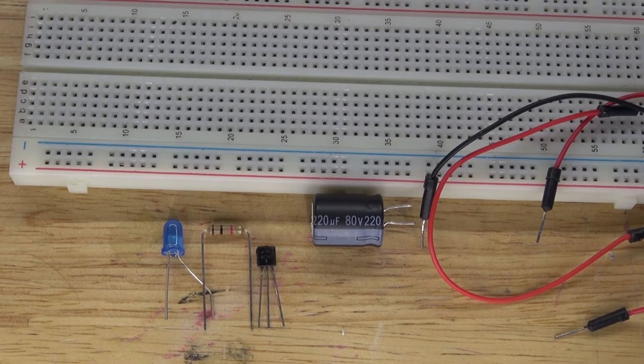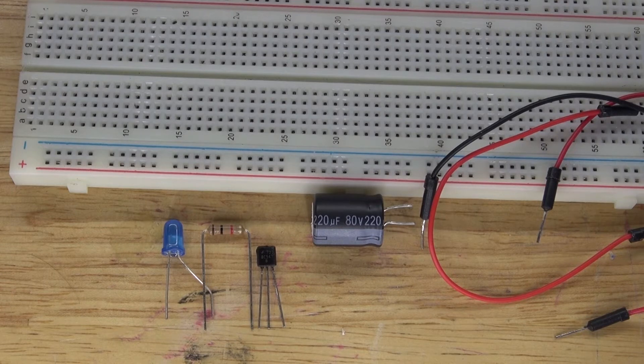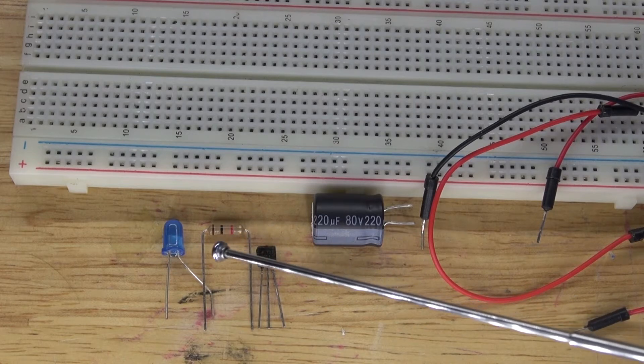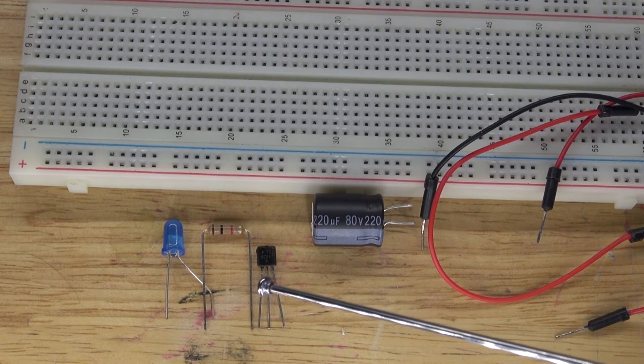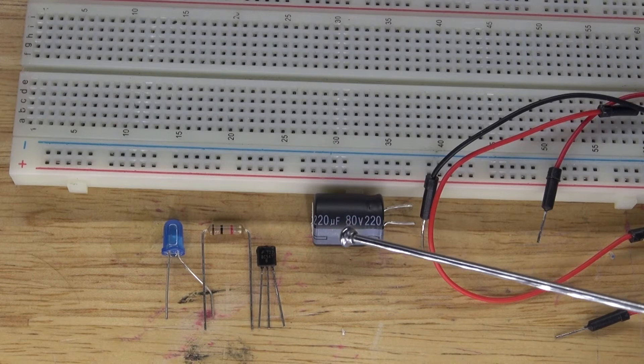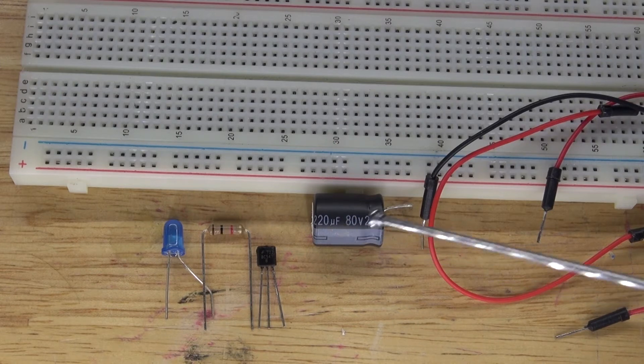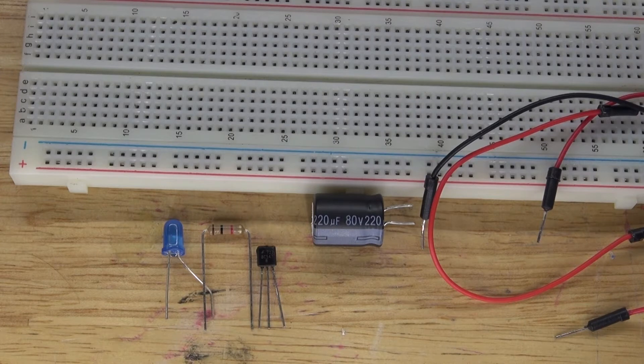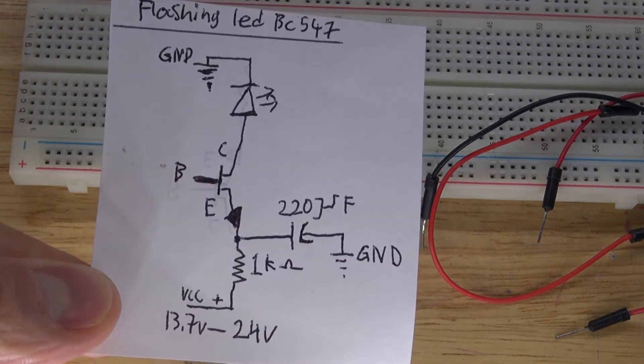These are the items you're going to need for this project. You'll need an LED, a 1K ohm resistor, a BC547 transistor, a 220 microfarad electrolytic capacitor, some jumper wires, and a breadboard. This right here is a schematic to create this circuit. Now let's assemble this project.